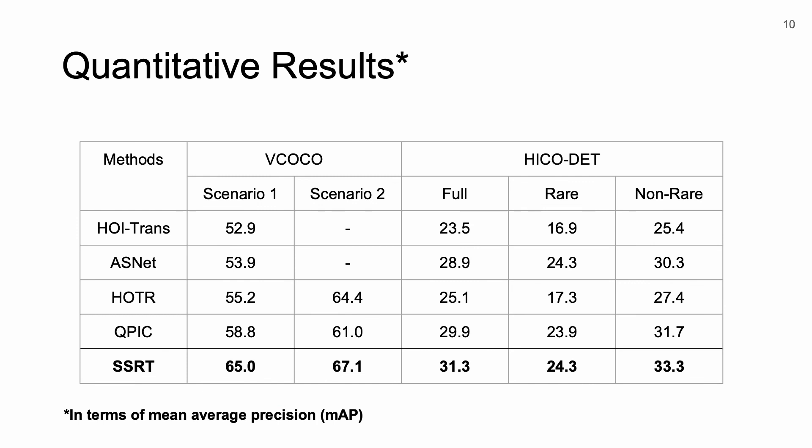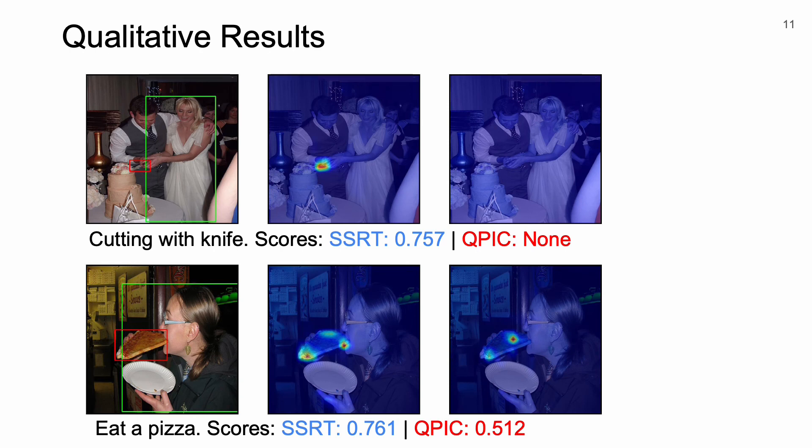We evaluate SSRT on benchmark datasets. In both VCOCO and HICO-DET, our method outperforms existing methods with a clear margin under different settings. Additionally, we also visualize the attention maps for different queries and compare it with the state-of-the-art network QPIC. From this figure, we can clearly see SSRT focuses on the regions of the image that contain the interactions.